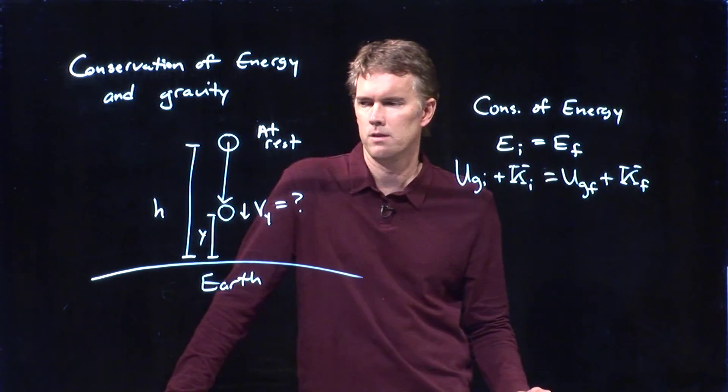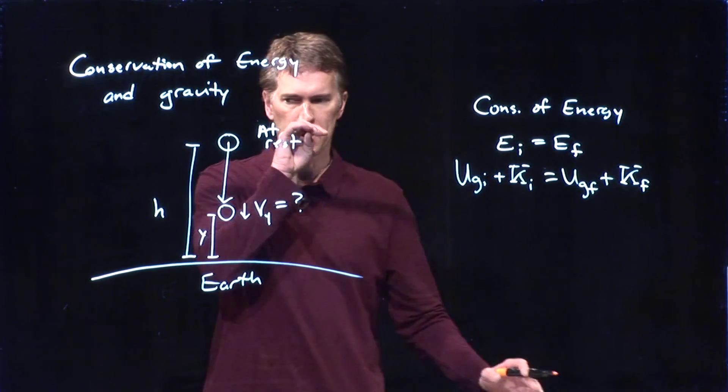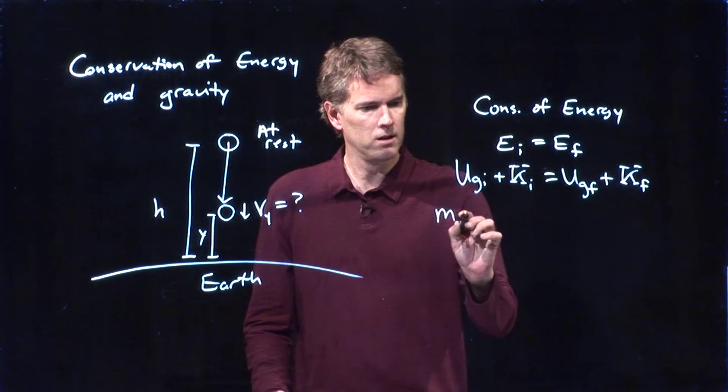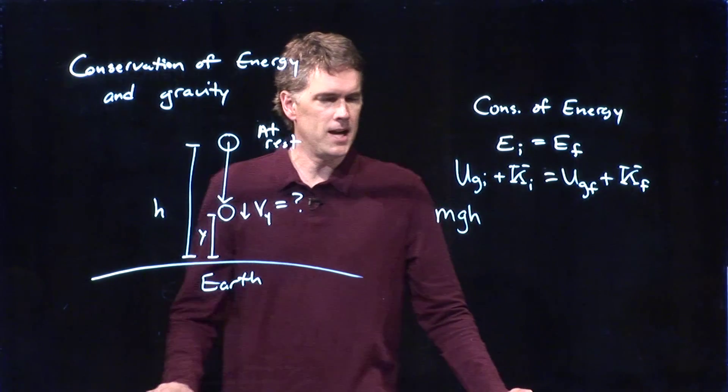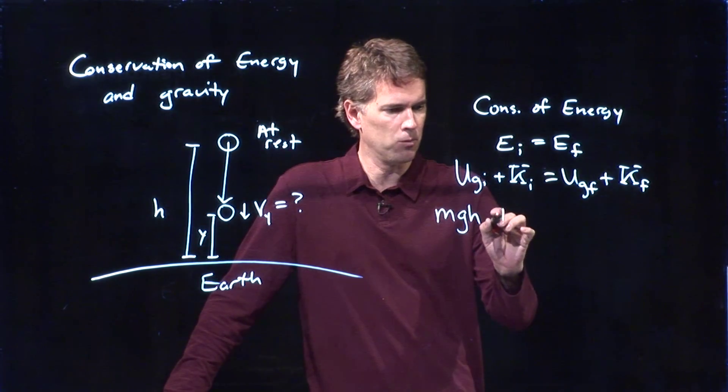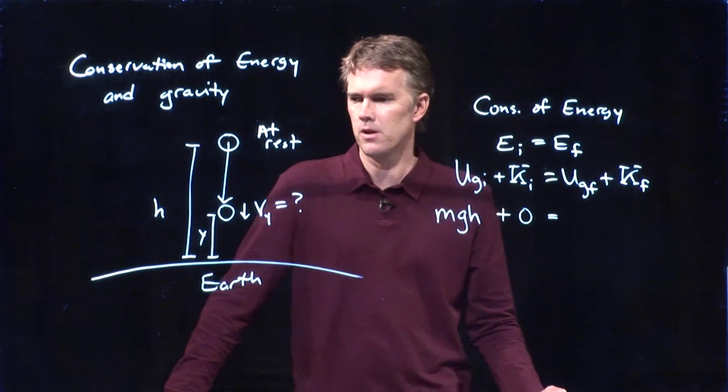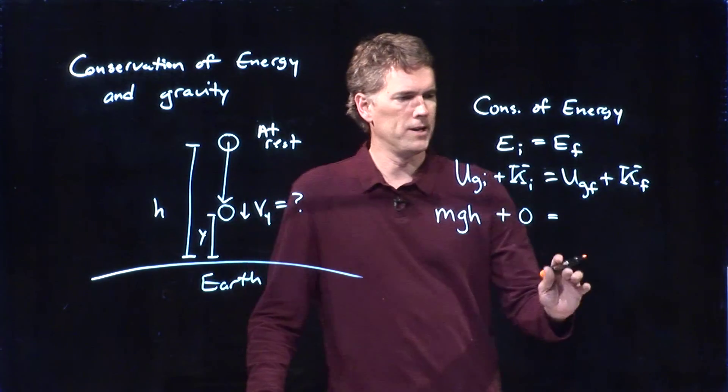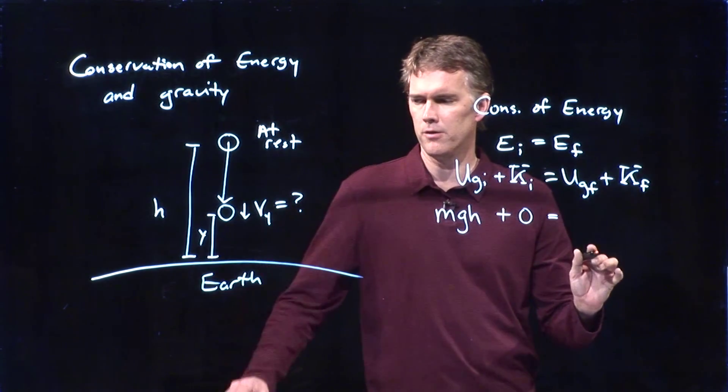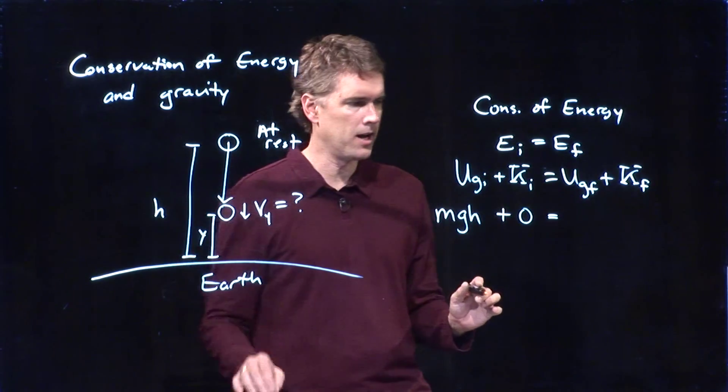And now let's see what all these terms are. So when we start up there at height h, we are MGH in gravitational potential energy. We said we're going to start at rest, so that term is zero. The final is going to be what? Well, we're down at the surface of the earth. That would be zero, but we're not quite there. We're up here at height y.